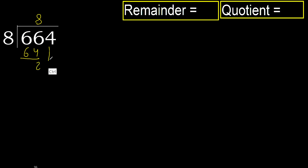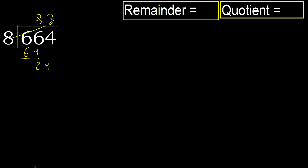Subtract, then bring down the next digit: 24. 8 multiplied by 4 is 32, which is greater. 8 multiplied by 3 is 24, which is not greater.